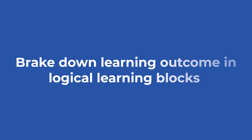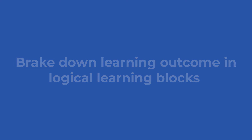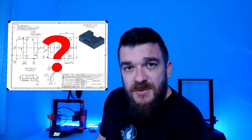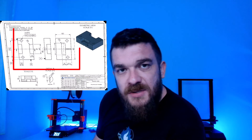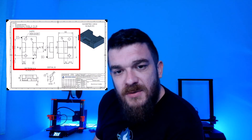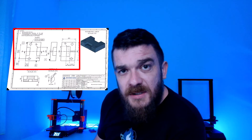The next step is to break down the learning outcome into logical learning blocks. In our case, we want to create engineering drawings using CAD software. But what are engineering drawings and what types do we have? Then there is the projection on the engineering drawing — so how do I get that projection? I need a CAD model for that. That is, in a nutshell, how we are going to break it down.